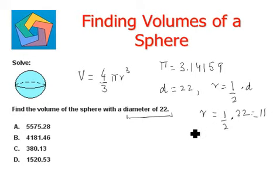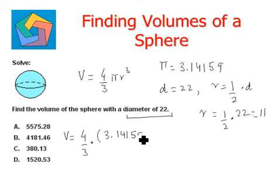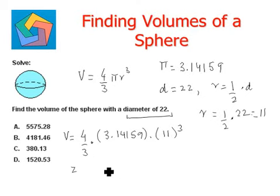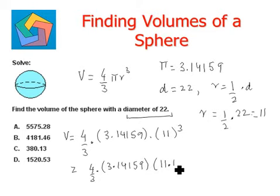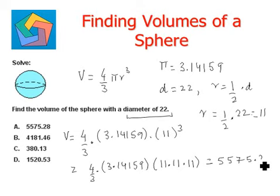So our radius is 11. We plug into the formula: 4/3 × 3.14159 × 11³. 11 cubed can be written as 11 × 11 × 11. When we solve the whole thing, we get 5575.28. This is the final answer, which can be seen in option A.